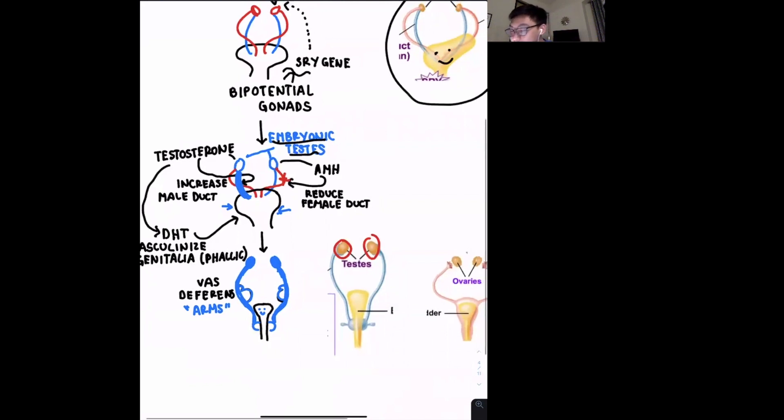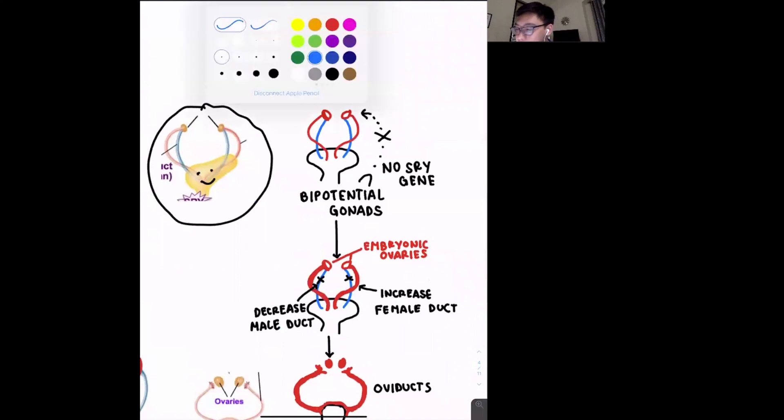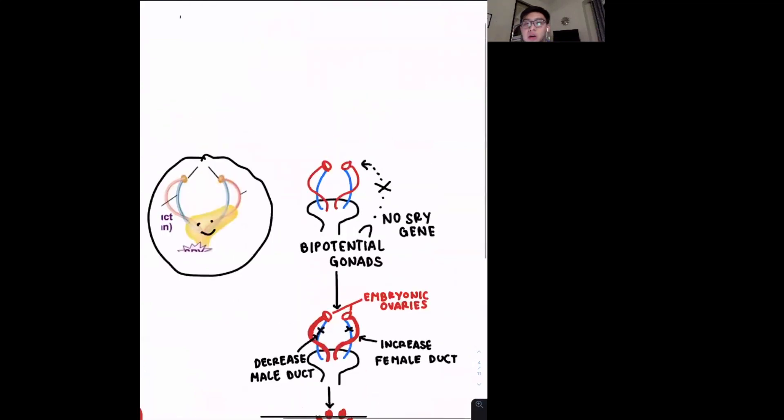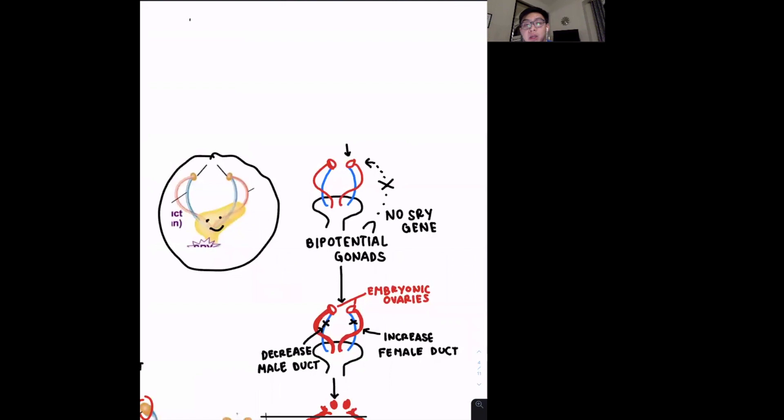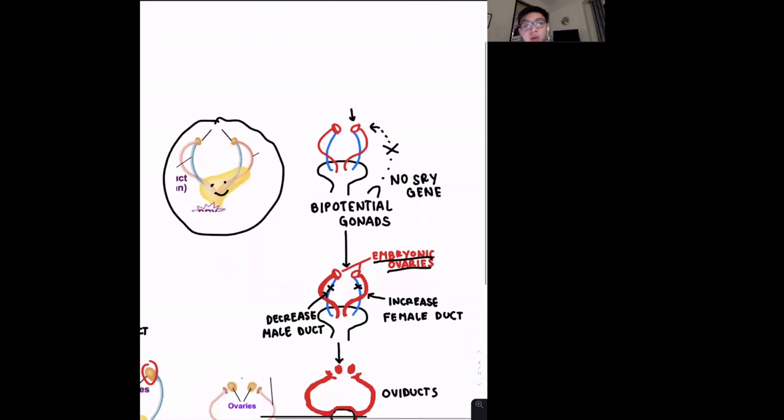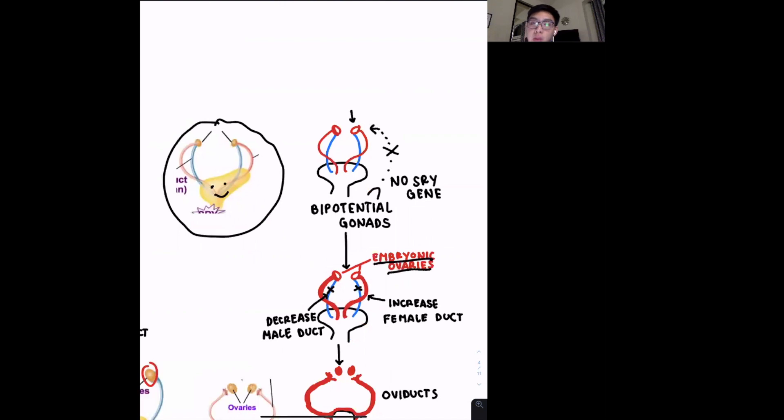So now let's look at the female case. So for females, we have no SRY gene. And so because of that, these ball-looking structures will not become embryonic testes. And by default, they become embryonic ovaries. And so once embryonic ovaries develop, we do not have the production of testosterone or AMH.